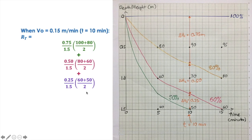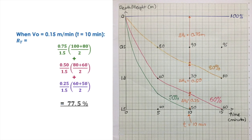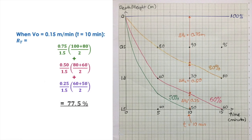Those values sum to 77.5. Alhamdulillah, we already got the value. So basically, when you are designing a tank with a detention time of 10 minutes, you should be able to remove 77.5% of the particles. That is the first type of question you will be seeing in sedimentation topics.